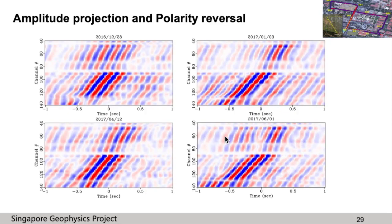So how to identify the wave type? From the correlogram, we can observe the polarity reversal in the data, so the data must contain Love wave. There is also amplitude projection in the data, so the data may also contain Rayleigh wave. However, for real cases, the amplitude projection is not that reliable since the coupling condition of each channel may be different. There are also two manholes near channel 70 and channel 83, so the coupling is very poor and the amplitude is very weak. Now we also have the ambient noise wave field propagation direction. From all the information we have, we can conclude that the surface waves recorded by the red line are mainly Love waves.